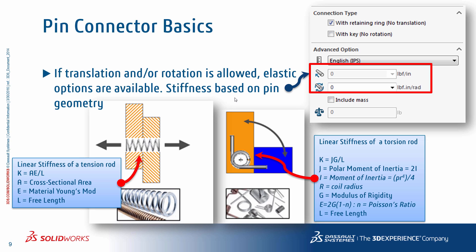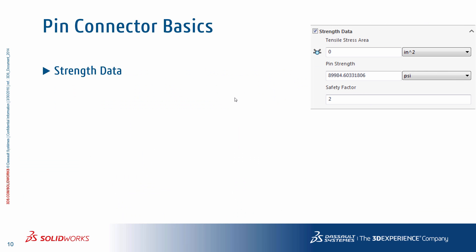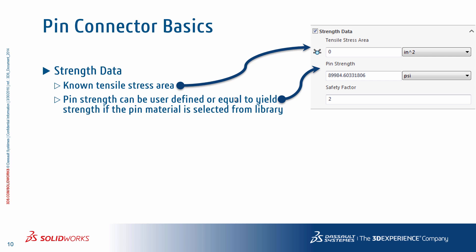If friction in the pin is required, actually modeling the solid fastener and applying contact conditions with friction is probably the best approach. It is your responsibility to choose an elastic stiffness that best represents your actual system. A good starting place may be to estimate the spring stiffness using a solid rod approximation with your actual pin geometry. Equations are shown for this in the case of a torsion rod as well as a tension rod scenario. If the results of interest are sensitive to variations in this stiffness value, you may want to iterate a few times. With the pin connector, you can also account for the mass of the pin so that if the weight is significant or contributes to vibration issues, that effect is not discounted.